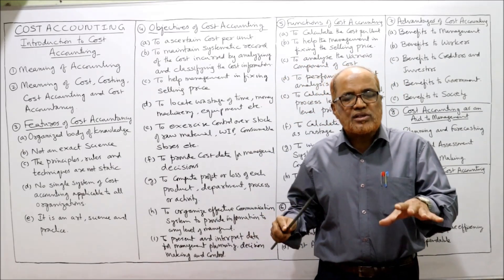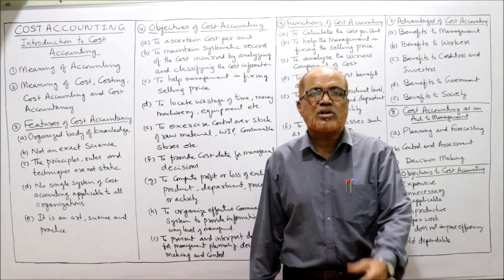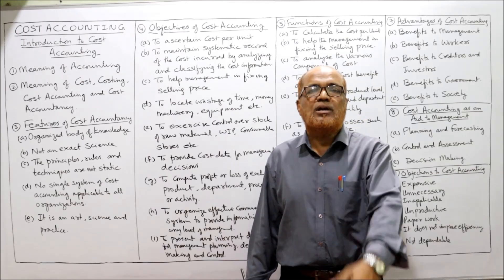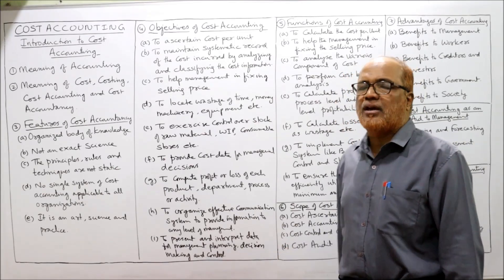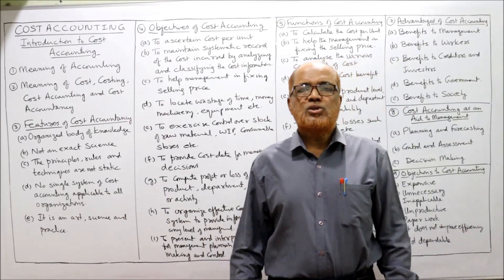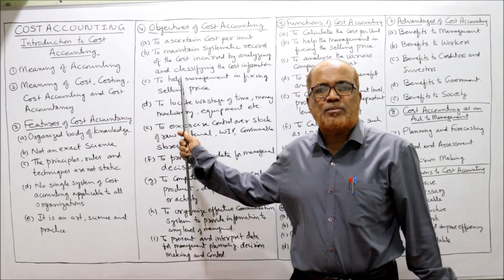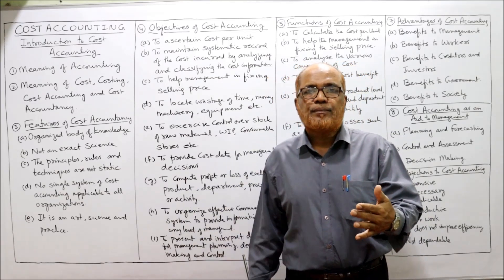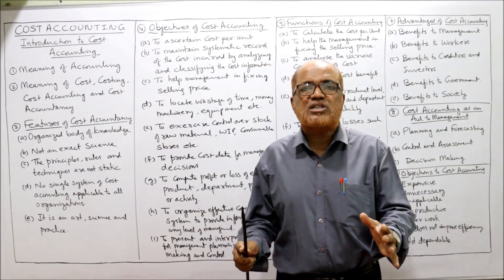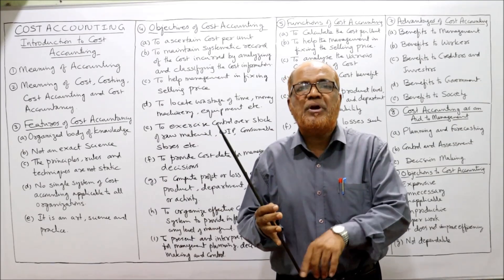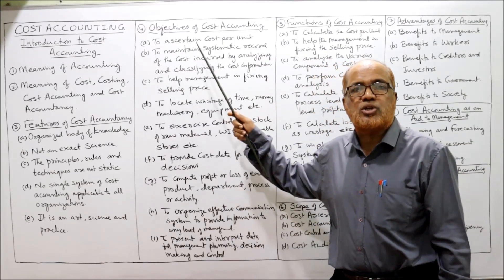Cost accounting also helps organize an effective communication system — passing information between different departments, because without coordination it is difficult to achieve objectives. Lastly, to present and interpret data for management planning, decision-making, and control. It is the responsibility of cost accounting to process, analyze, and interpret data and provide reports to management for effective planning, controlling, and decision-making.